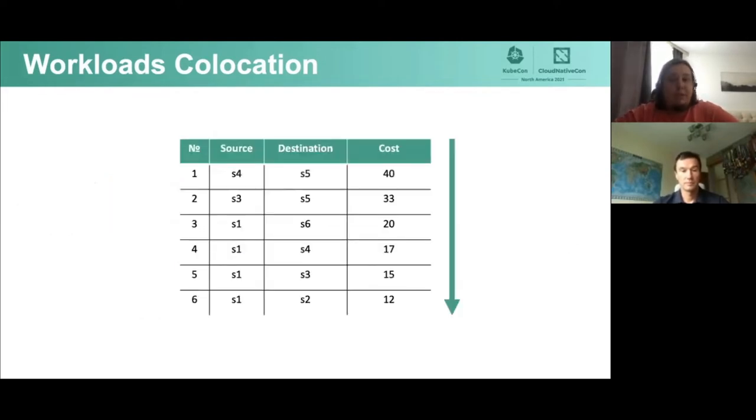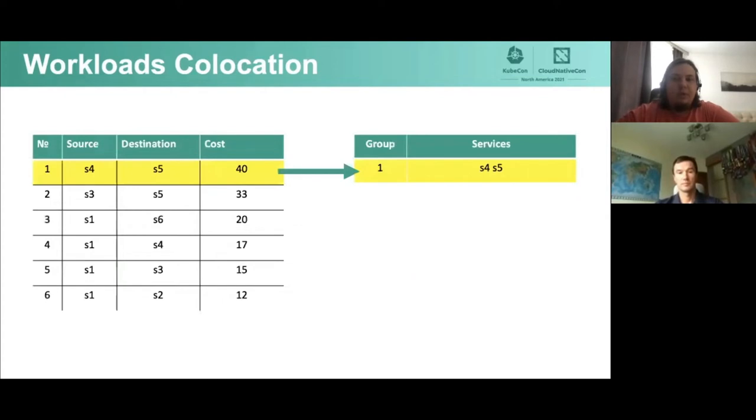As a result, we got a simple data array, which is shown on this slide. The rows in the table correspond to the edges of our graph, and the columns correspond to vertices and weights. If we sort this dataset in descending order of edge weights, we can group our vertices in one cycle.